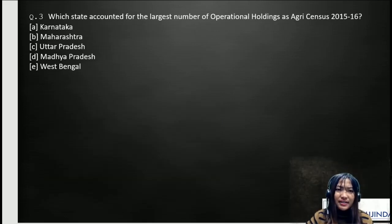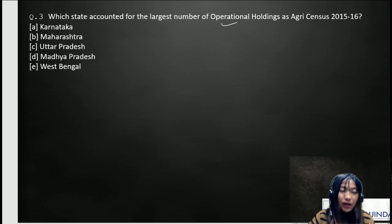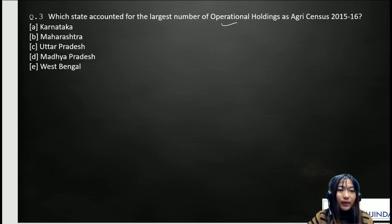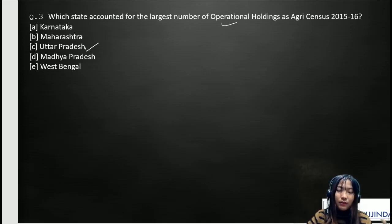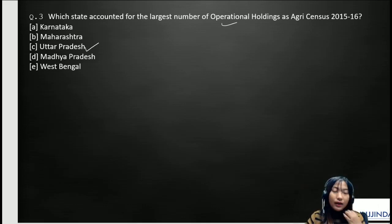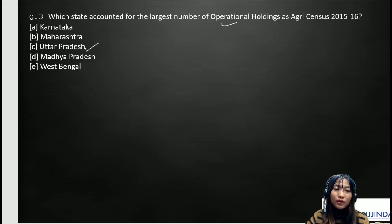Question number three: which state accounts for the largest number of operational holdings as per Agriculture Census 2015-2016? The options are: A) Karnataka, B) Maharashtra, C) Uttar Pradesh, D) Madhya Pradesh, and E) West Bengal. The correct answer is Uttar Pradesh. Censuses involve a lot of stats and figures, which are hard to remember, but reading them again and again will help imprint them in your mind.